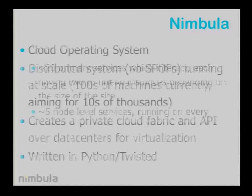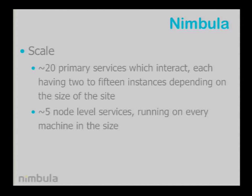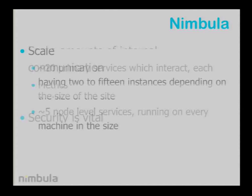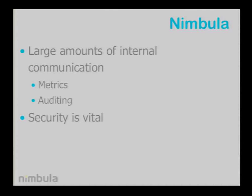What sort of scale are we talking about? We've got 20 primary services which interact with each other, which intercommunicate to allow the system to run. Each one of those services is replicated two to fifteen times for redundancy. And then we have about five services which run on every computer in the system. The problems we face is that we have a lot of internal communication between these services, whether that be metrics, auditing, or just merely making requests of each other. And there's a lot of vital security stuff happening.